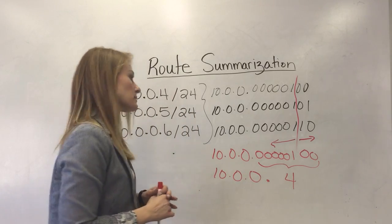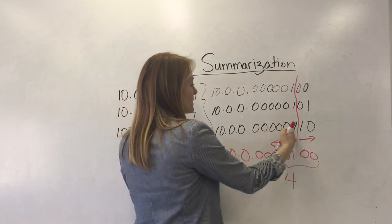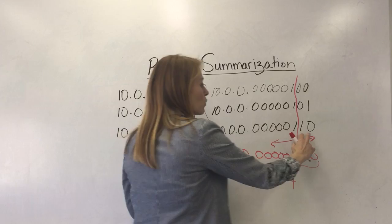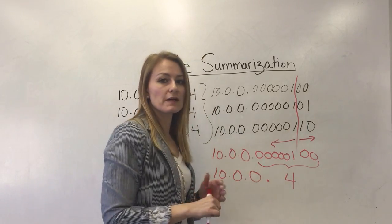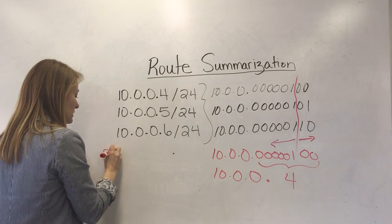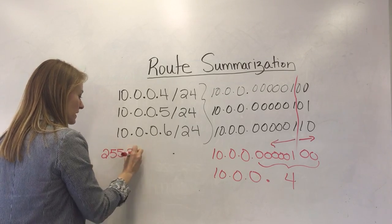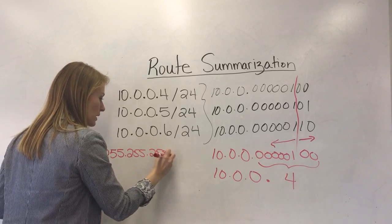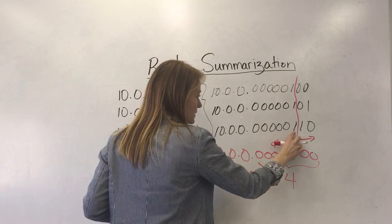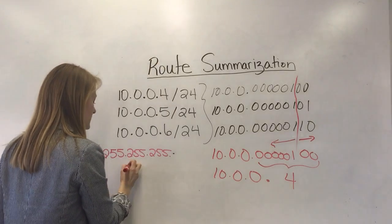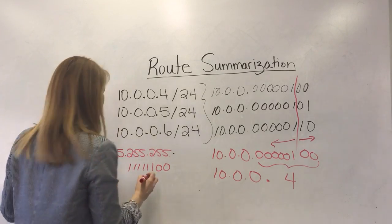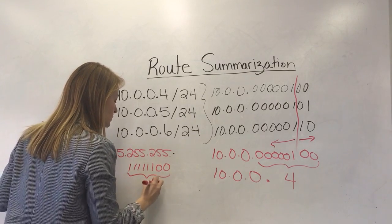Now we also need to determine the subnet mask. So everywhere in the IP address where the bits are the same we want to be ones in the subnet mask. Where they become different we're gonna make those zeros. So our subnet mask would become if the first octet is all ones we get 255, the next octet is all ones, the next octet is all ones, and then the last octet is what changes. So we get all ones here and then a zero and a zero. So we end up with one two three four five six seven eight which translates to 252.